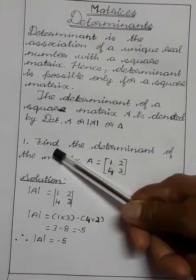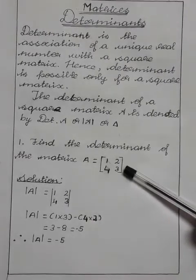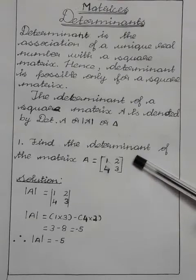First sum: Find the determinant of the matrix A is equal to 1, 2, 4, 3. The question is what is the matrix? A matrix is determined. Determinant is calculated.